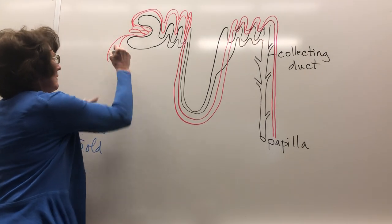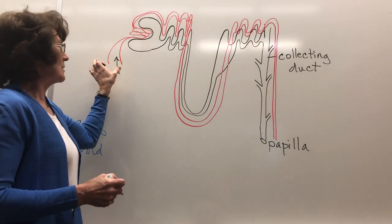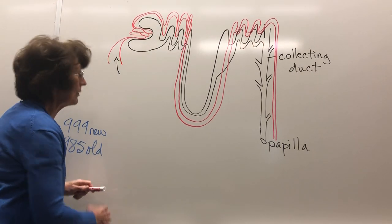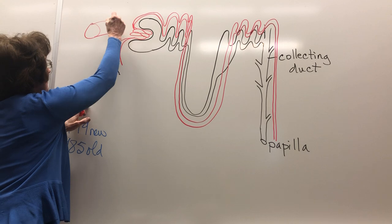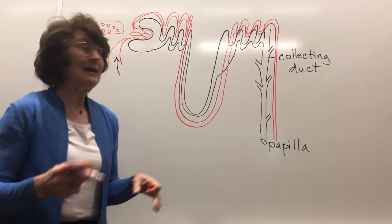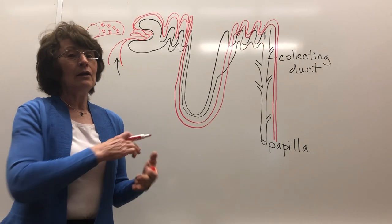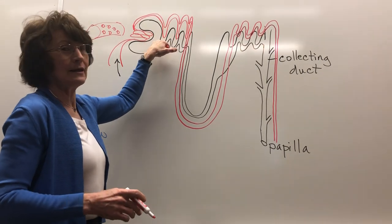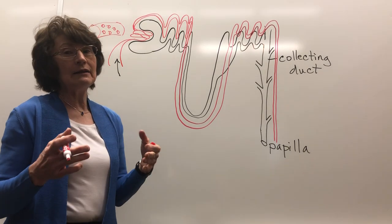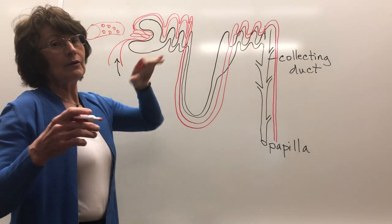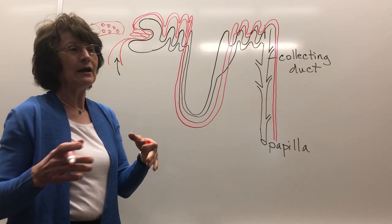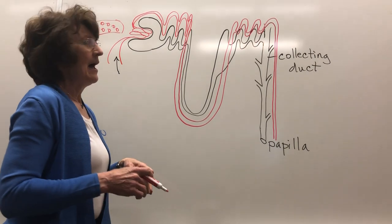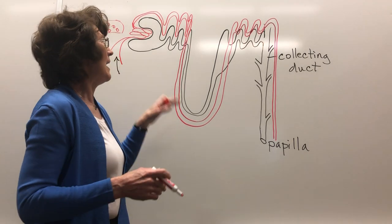First of all, here's the afferent arteriole — we know it's wider than the efferent. It's going to put pressure into the glomerulus. In the glomerulus there are fenestrated capillaries. What does that allow? Lots of filtrate to go through. How much filtrate goes into the glomerular capsule? 180 liters a day. That comes out to a glomerular filtration rate of 125 milliliters per minute — half a cup per minute for the two kidneys. There are a million nephrons per kidney.